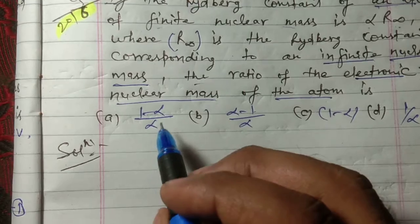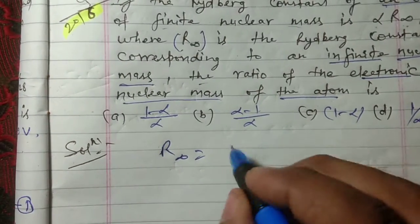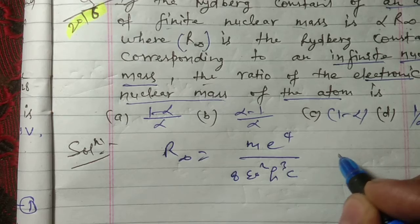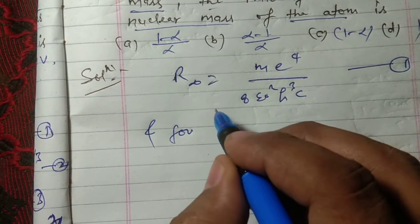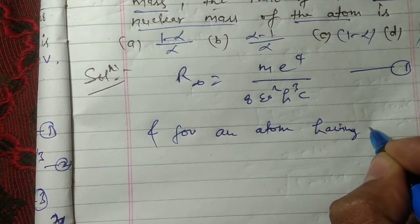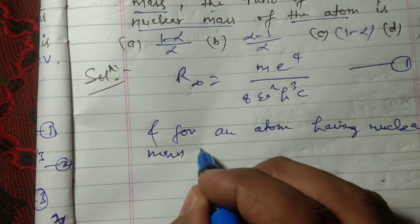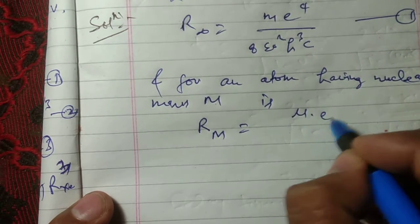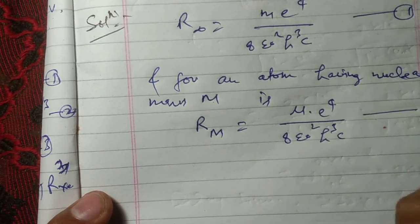We know that the Rydberg constant for an atom having an infinitely heavy nucleus is R_∞ = m_e⁴ / (8 ε₀² h³ c). Suppose this is equation 1. And for an atom having a nuclear mass capital M, it is R_M = μ⁴ / (8 ε₀² h³ c). This is equation 2.